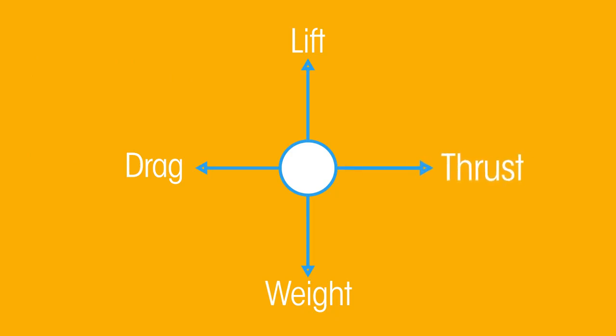The force of thrust pushes the aeroplane forwards but the plane is traveling at a constant velocity so the magnitude of the drag and thrust forces must be equal.